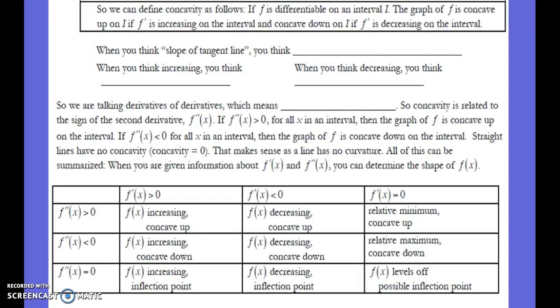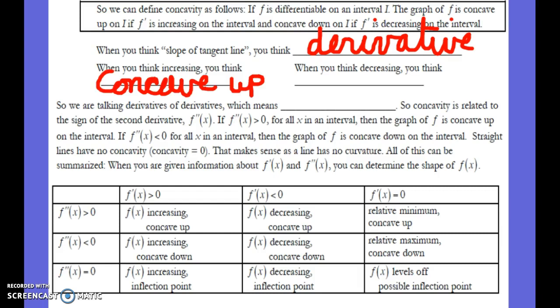Let's define concavity formally. If f is differentiable, the graph of f is concave up when the derivative is increasing on the interval, and concave down when the derivative is decreasing on the interval. So: tangent line slope means derivative; increasing means concave up; decreasing means concave down.